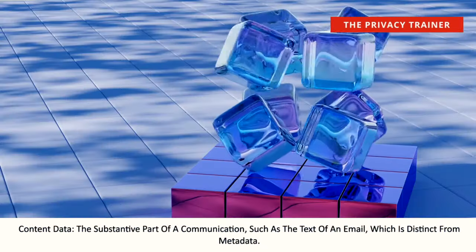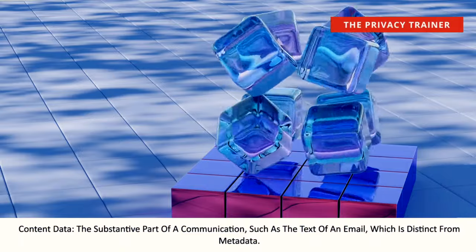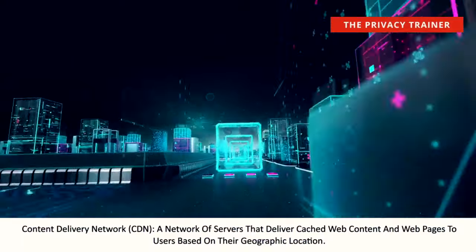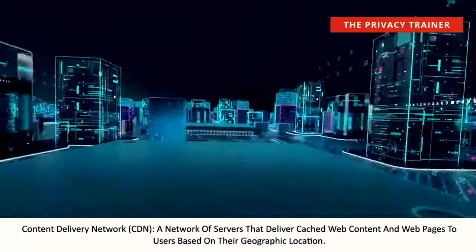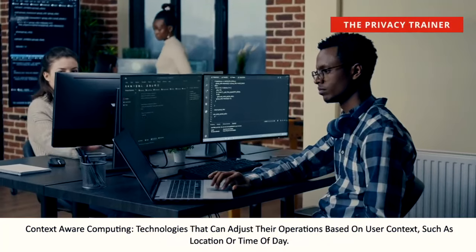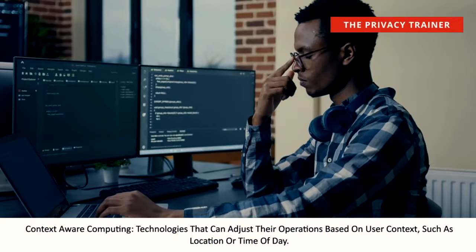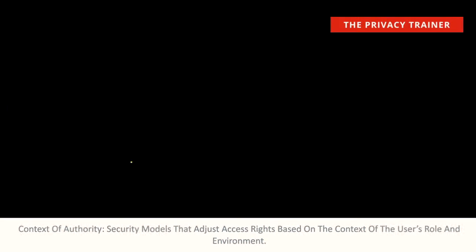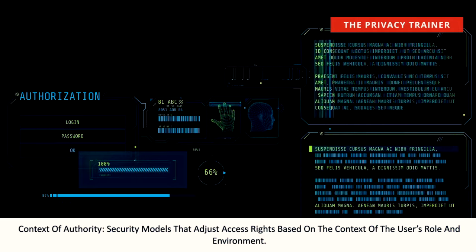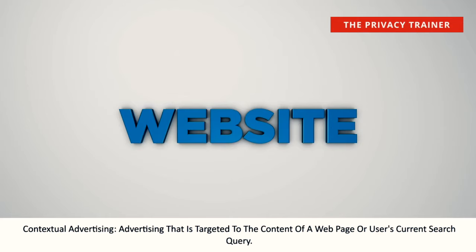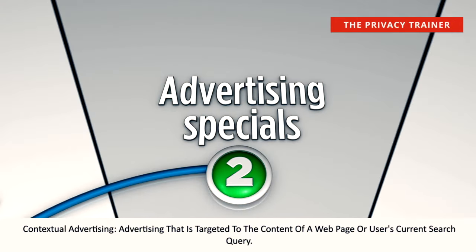Content Data. The substantive part of a communication, such as the text of an email, which is distinct from metadata. Content Delivery Network, CDN. A network of servers that deliver cached web content and web pages to users based on geographic location. Context-aware computing. Technologies that can adjust their operations based on user context, such as location or time of day. Context of authority. Security models that adjust access rights based on the context of the user's role and environment. Contextual advertising. Advertising that is targeted to the content of a web page or user's current search query.